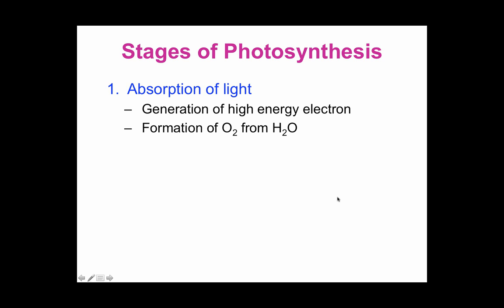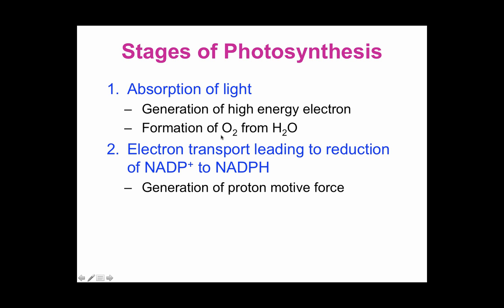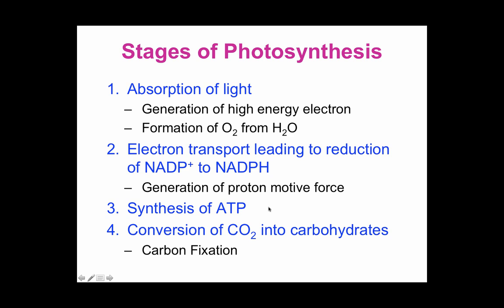Let's take a look at the stages of photosynthesis. The first stage is the absorption of light — photons are going to generate high-energy electrons. Through reactions in photosystem II, we'll see formation of oxygen from water. We're also going to have an electron transport system leading to reduction of NADP+ to NADPH, and that will also generate a proton motive force that can be used for ATP generation — we call this photophosphorylation because it uses light energy. Last, we'll have conversion of carbon dioxide into carbohydrates through carbon fixation, in particular the Calvin cycle.